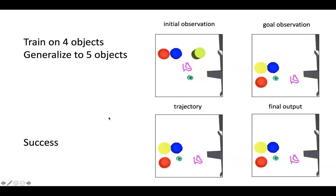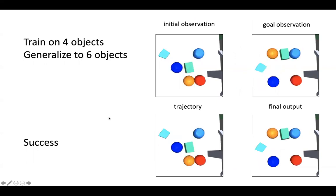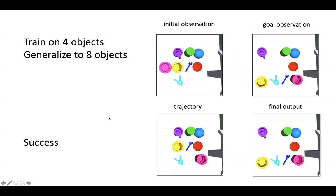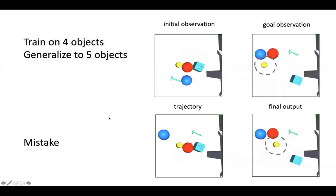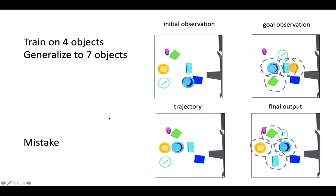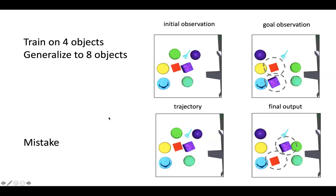But because the state transformations we learn are agnostic to entity type and context, we can train only four objects and generalize to five objects, generalize to six objects, generalize to seven objects, and generalize to eight objects. But our method also makes mistakes. Here we see that it failed to move the yellow ball. Here it failed to move the green hammer. Here it made multiple mistakes. And here it swapped the position of the red and purple cubes.